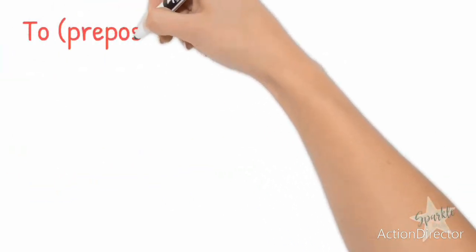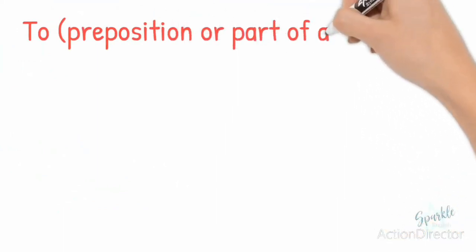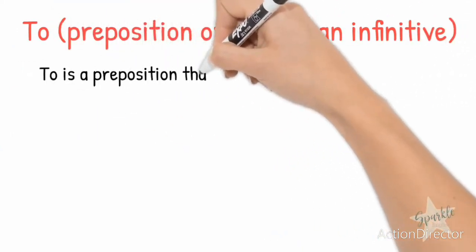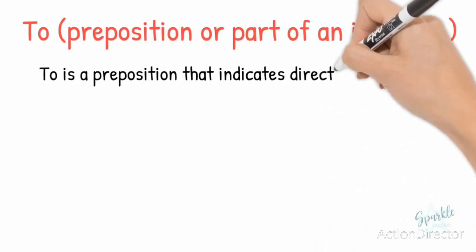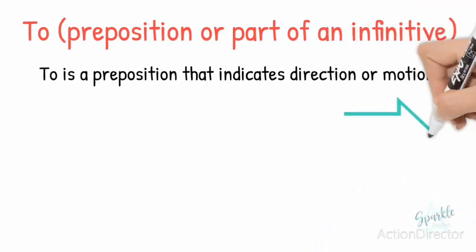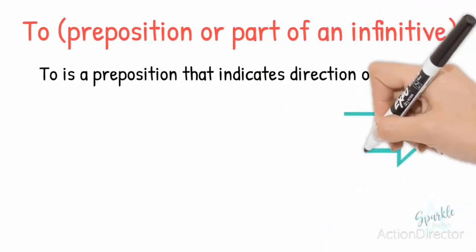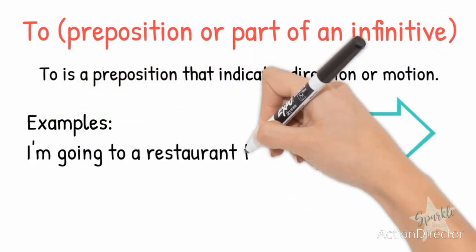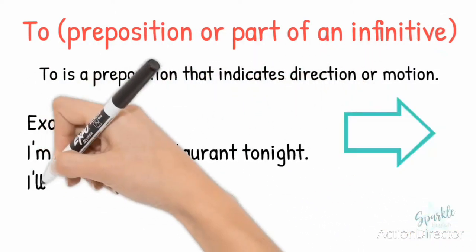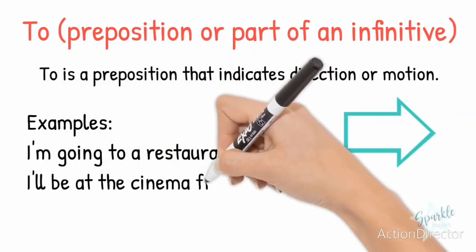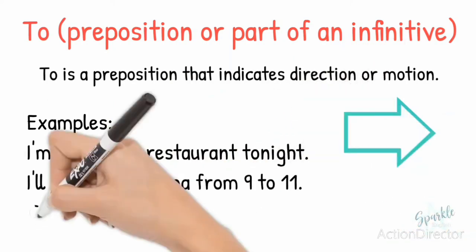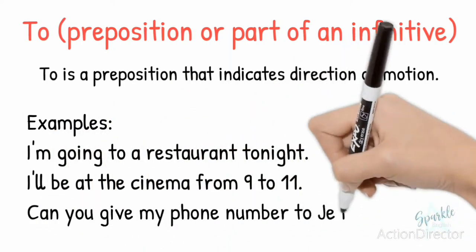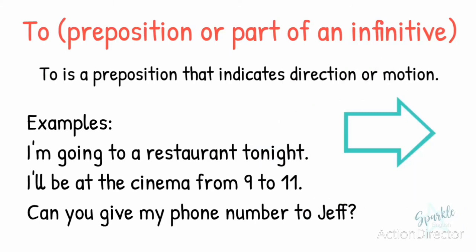To, spelled T-O, is a preposition or part of an infinitive. As a preposition, to is used to indicate direction or motion. Let's look at some examples: I'm going to a restaurant tonight. I'll be at the cinema from 9 to 11. Can you give my phone number to Jeff?